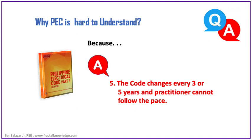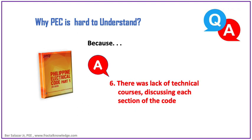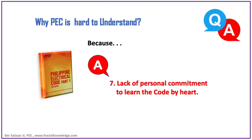We are lucky because the last edition of PEC 1 was 2009, then followed in 2017, and nothing came out yet in 2022. The sixth reason why PEC is hard to understand is because there are not enough technical courses offering explanations in layman's terms — the application of the code and the reason behind it — with no chapter-by-chapter or section-by-section discussion. The seventh reason is because the person with the electrical profession is unwilling to commit to learning the code by heart. Others are willing but have no time, or there are other barriers as previously mentioned.